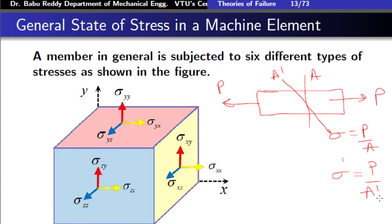When you calculate stress at this point, let me call it sigma', you will get P by A'. As you can see from this diagram, A' is bigger than A because it is an inclined area. Because A' is bigger, sigma' will be smaller. As I keep rotating this area, the stress keeps decreasing, and when I rotate back it increases and becomes maximum. So stress at a point depends not only on the applied load, but also on the inclination of the cross-section being considered.